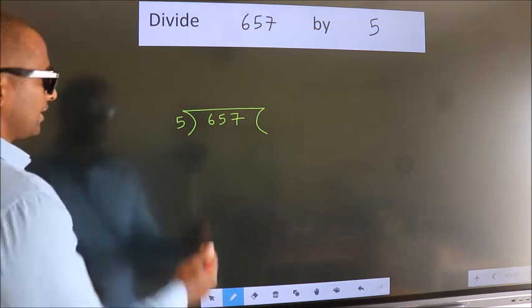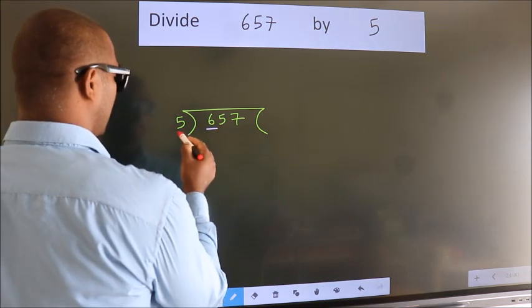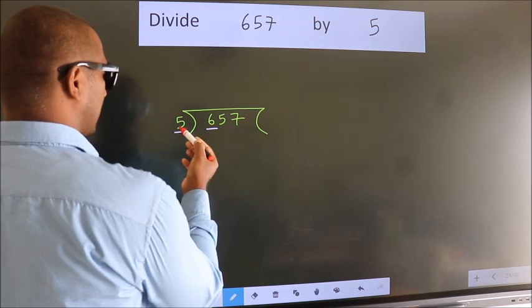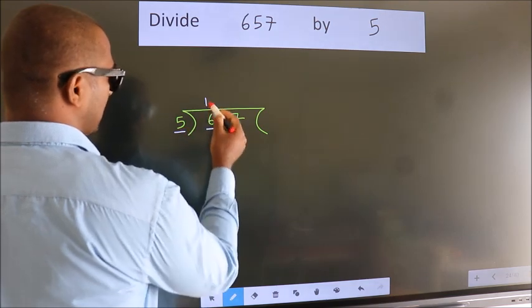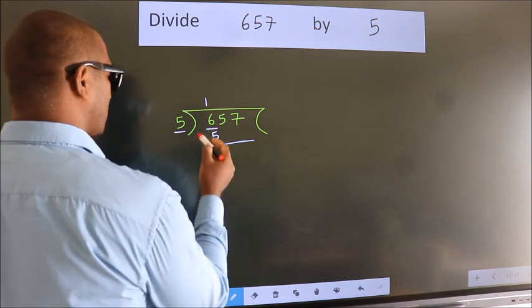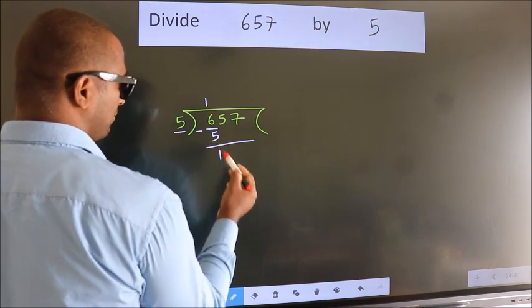This is your step 1. Next, here we have 6, here 5. A number close to 6 in the 5 table is 5 once, 5. Now we should subtract. We get 1.